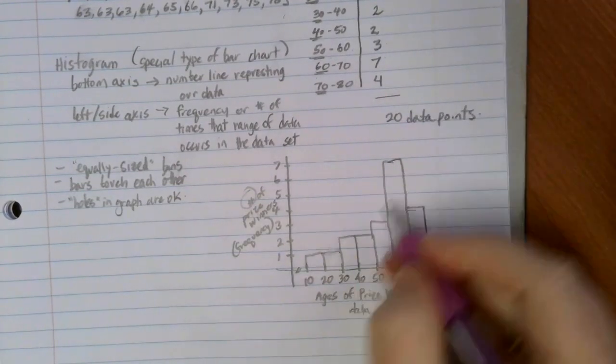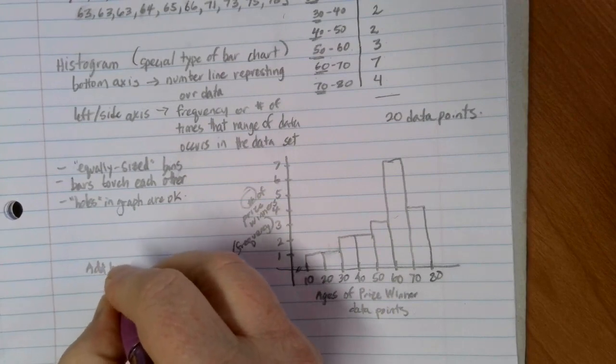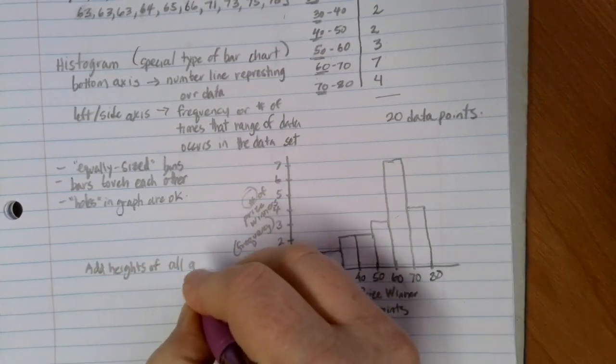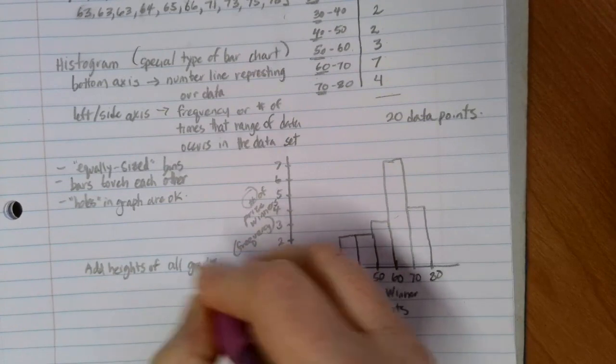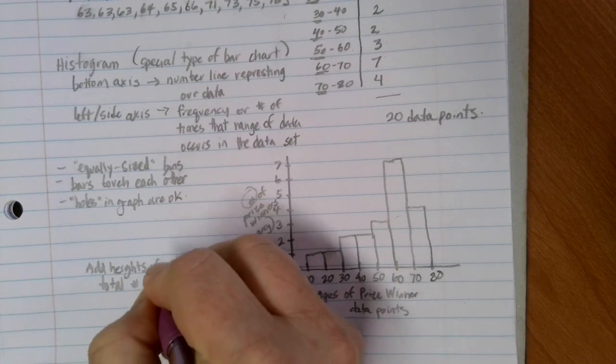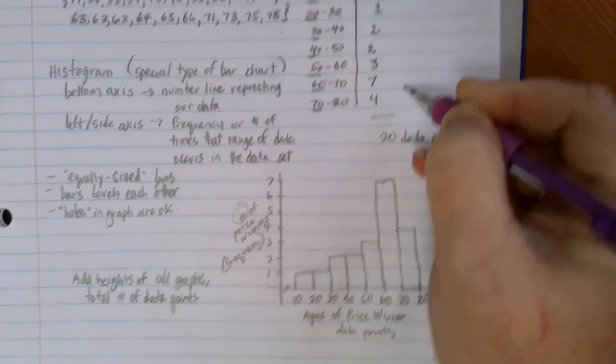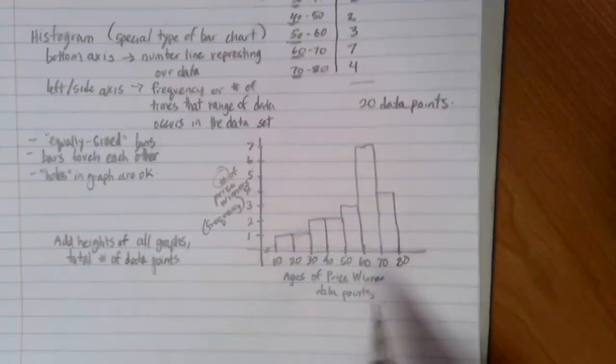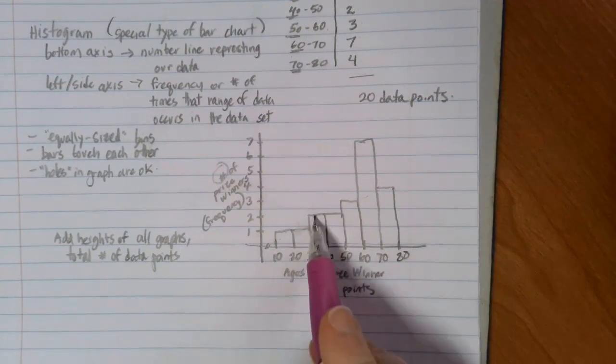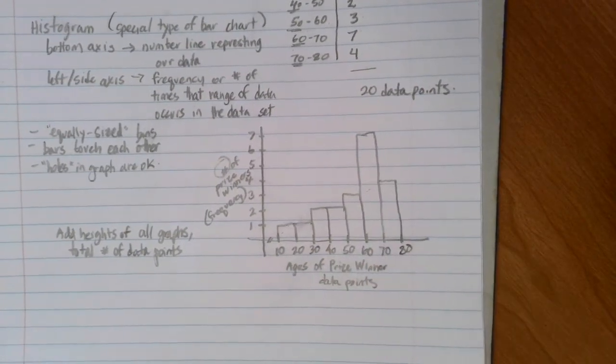Notice that our frequency here, if we add the heights of all the graphs, we should get the total number of data points. Just like we added our frequency from our table up here to be 20, we could add the heights here because they're those same numbers, 1 plus 1 plus 2 plus 2 plus 3 plus 7 plus 4, and we'd get our 20 data points represented.